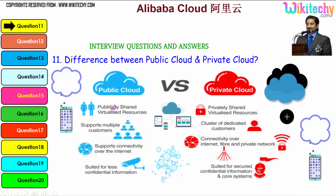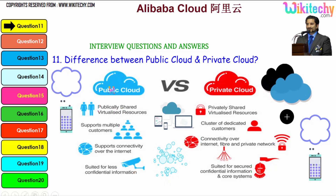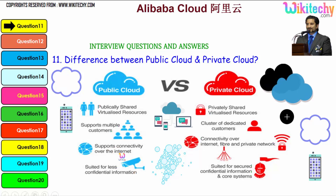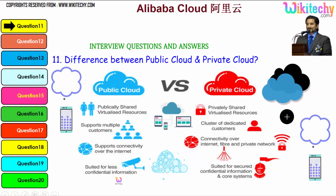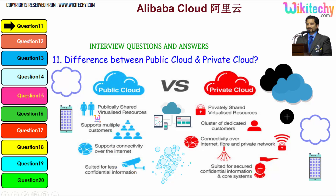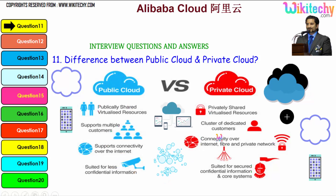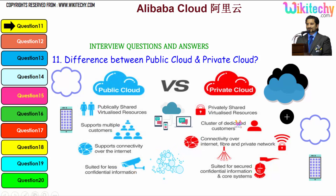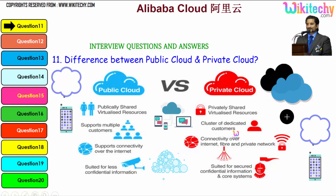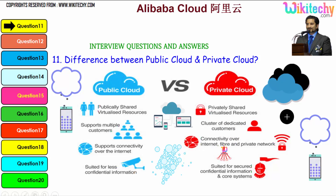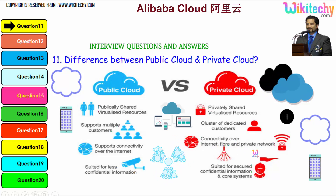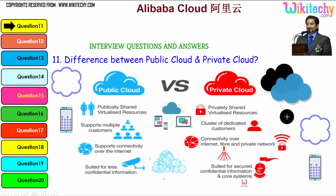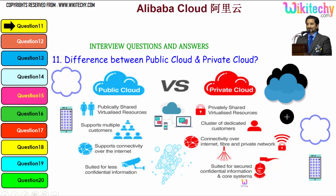Still further: public cloud uses publicly shared virtual resources, supports multiple customers, supports connectivity over the internet, and is suited for less confidential information. For private cloud, you have privately shared virtualized resources, a cluster of dedicated customers, connectivity over internet, fiber, and private network — and it is suited for secure, confidential information and core systems.